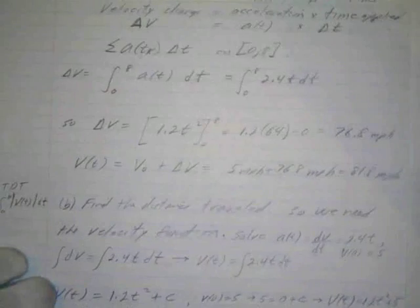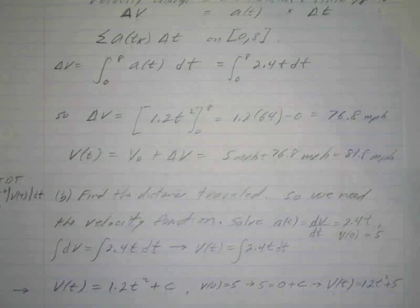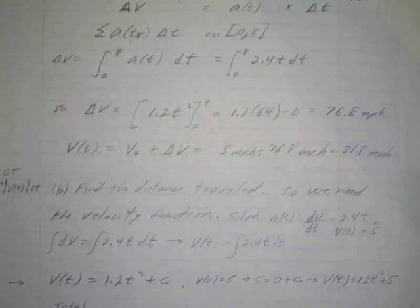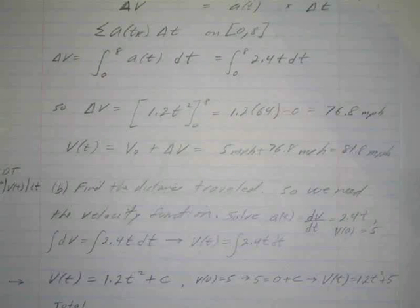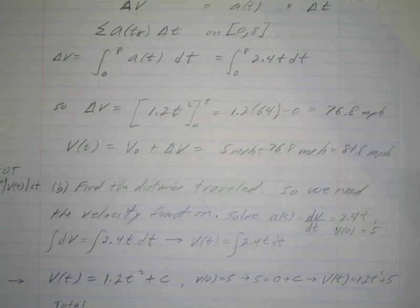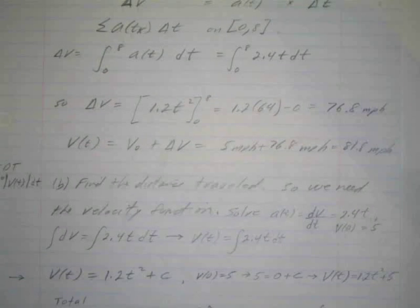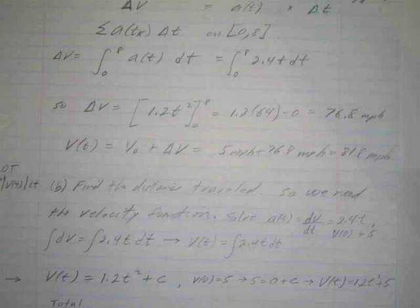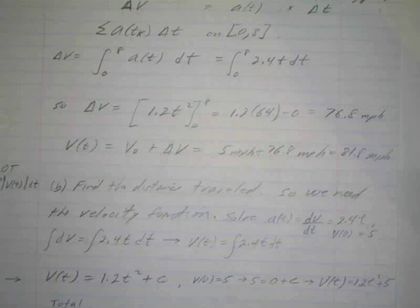The next one is example four. A car moving with an initial velocity of five miles per hour accelerates at the rate of a(t) equals 2.4t miles per hour per second for eight seconds. How fast is the car going when the eight seconds are up, and how far did the car travel during those eight seconds?